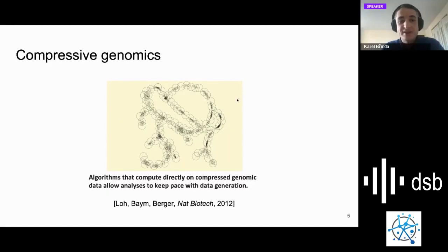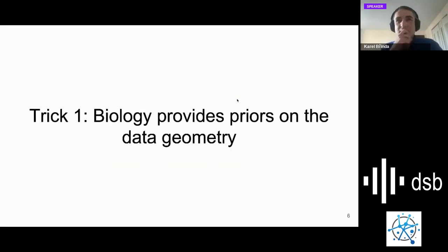We got very inspired by the concept of compressive genomics which was published nine years ago and presented at ISMB. This paper in Nature Biotech came with the idea that if we want to keep up with the data being generated, we need algorithms that can compute directly on compressed genomic data. The authors also made the observation that the biological data available in sequencing archives are not random data. They have a very strong geometrical structure and from the viewpoint of math they have very low metric entropy, which is a very important feature.